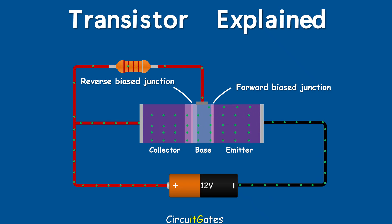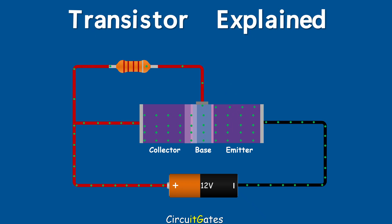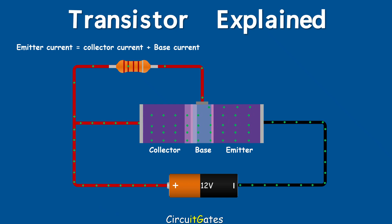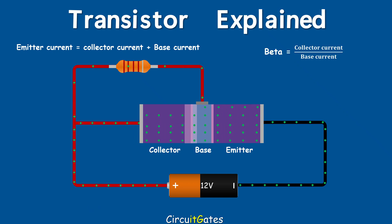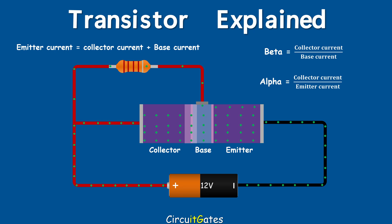In a transistor circuit, the current flowing into the emitter region is divided: the small part goes to the base region and the large part goes to the collector region. Therefore, emitter current is equal to the base current plus collector current. We also have two ratios used to find these currents: beta and alpha. Beta is the DC ratio of collector current to base current, and alpha is the DC ratio of collector current to emitter current. If beta or alpha are known, you can easily find these currents.